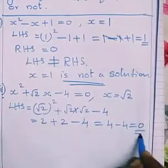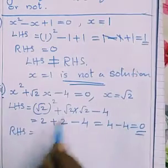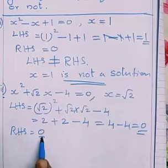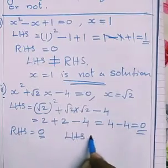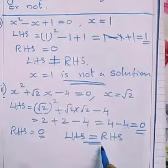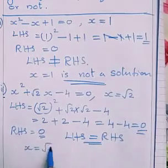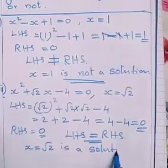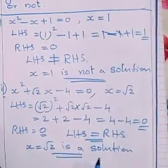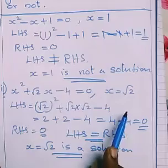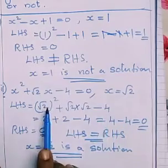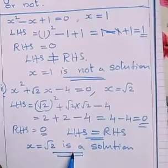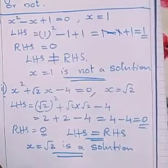You got LHS equal to 0. What is RHS? In the given equation it is 0. So LHS = 0 and RHS = 0, that is LHS equals RHS. We can say that x = √2 is a solution of the given quadratic equation. If LHS equals RHS, we can say that the given value is a solution of the given quadratic equation.